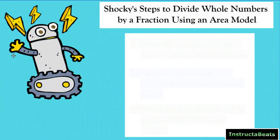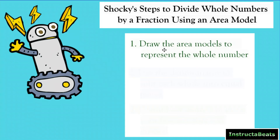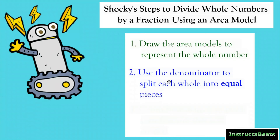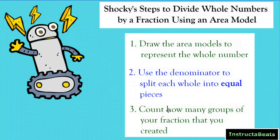Let's name the steps. Steps to divide whole numbers by a fraction using an area model: Step 1 — draw the area models to represent the whole. Step 2 — use the denominator of the fraction to split each whole into equal pieces; my denominator is five so I need five pieces in each whole. Step 3 — count how many groups of your fraction you created. I could make seven and one half groups, so my answer is 7½.